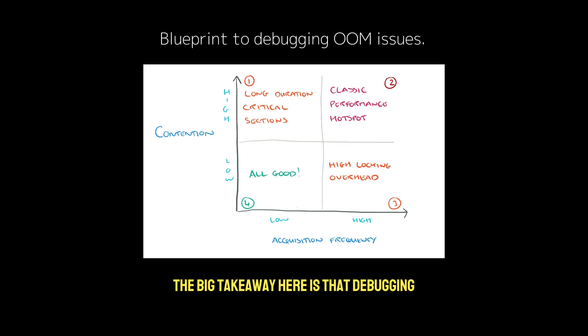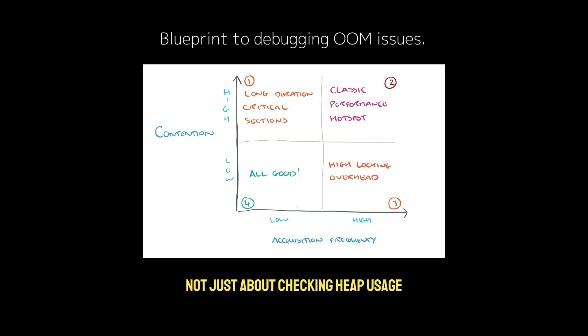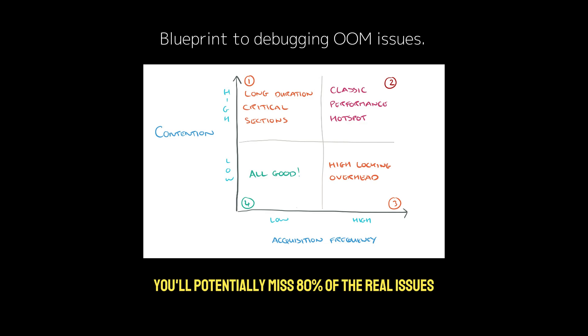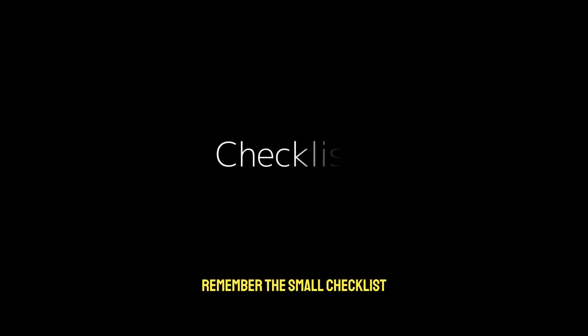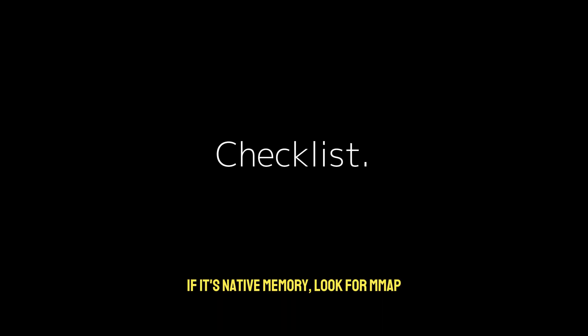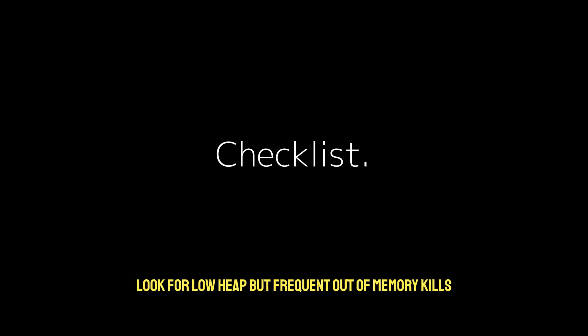The big takeaway is that debugging out-of-memory issues is not just about checking heap usage. If you're only looking at heap profiles, you'll potentially miss 80% of the real issues. Remember this checklist: if it's a runaway heap, check pprof. If it's native memory, look for mmap, io.Copy, or CGo code. And if it's fragmentation, look for low heap usage but frequent out-of-memory kills.